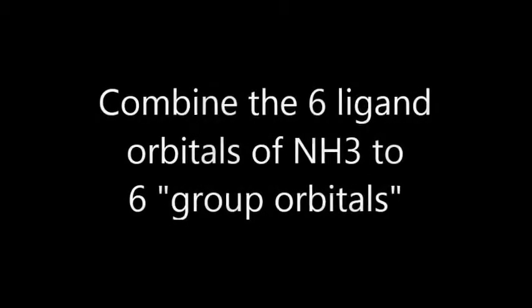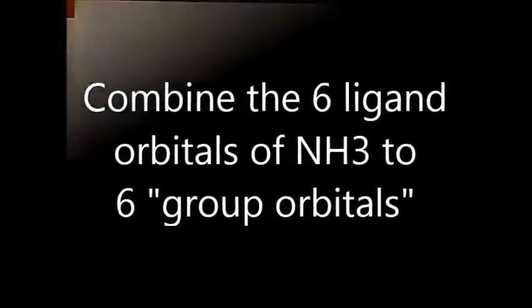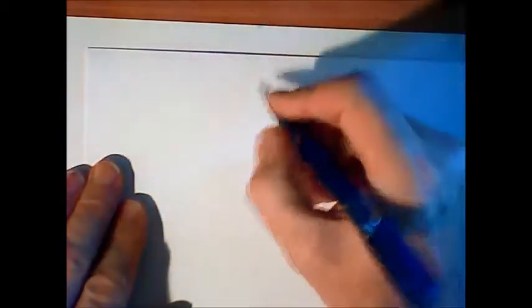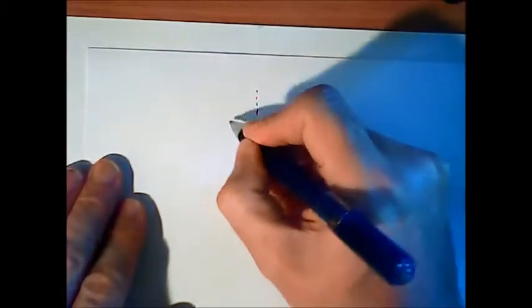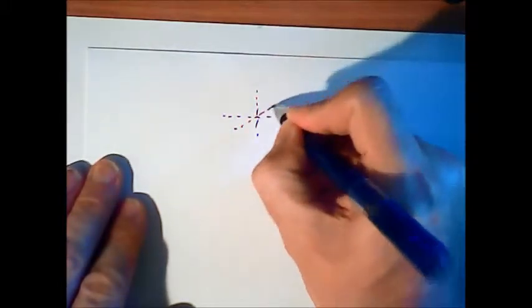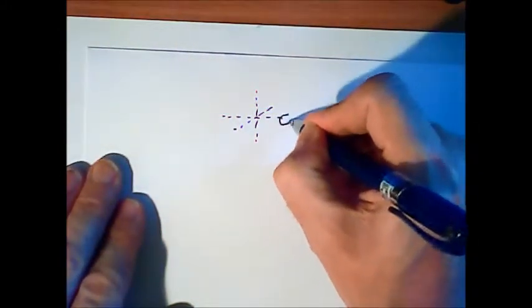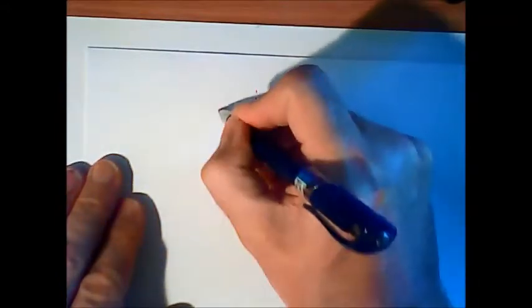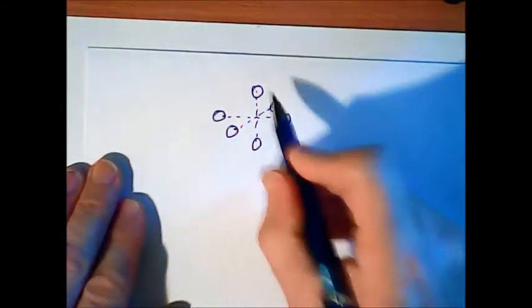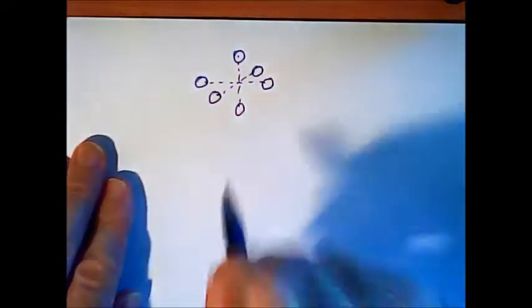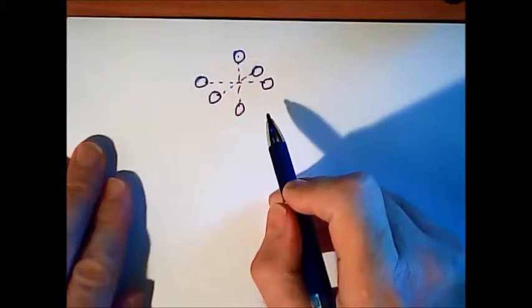The first group orbital always should be that we have all the single orbitals in the same phase. They have the same sign. In this case we draw the octahedron without the metal in the middle. So I just draw the lone pair. So we have six lone pairs orbitals in the same phase. They are all plus if you like. This is group orbital number one at the lowest energy.